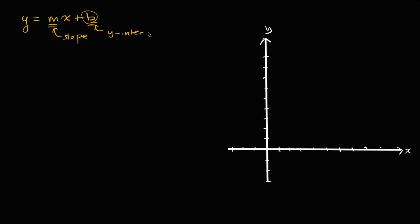The graph that represents the x-y pairs that satisfy this equation would intersect the y-axis at the point x equals zero, y is equal to b, and its slope would be m. We've already seen that multiple times.